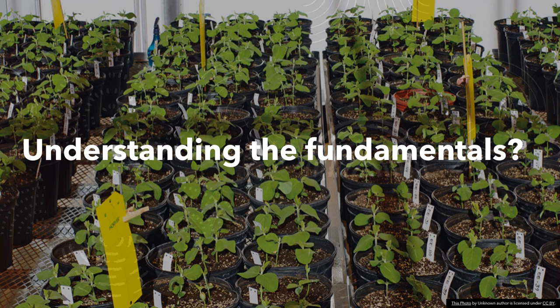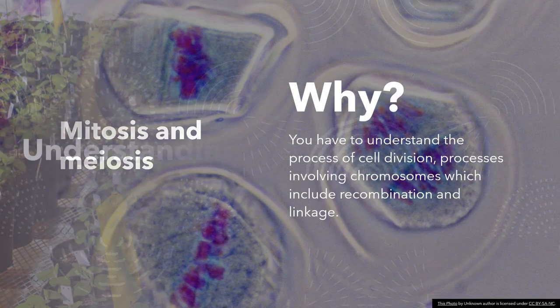In order to understand breeding, you have to begin by understanding the fundamentals. How do you carry out, for instance, interspecific or intraspecific hybridization? What are the limitations you will encounter, and what experimental designs can you apply? The first thing you will learn is mitosis and meiosis — a very fundamental element of knowledge. You must understand this process to understand segregation of chromosomes during meiosis and mitosis, as well as recombination and linkage. These are terms you will utilize during the process of breeding.